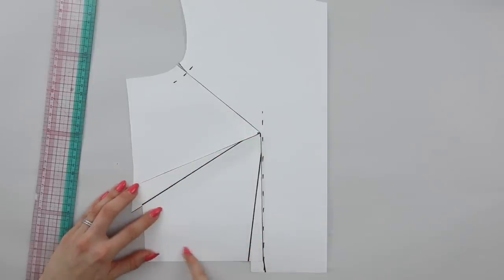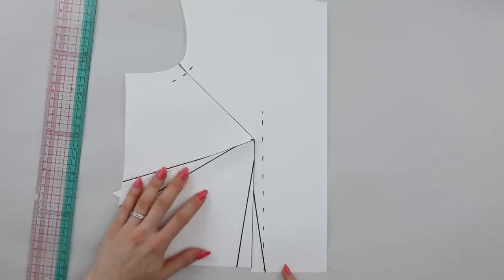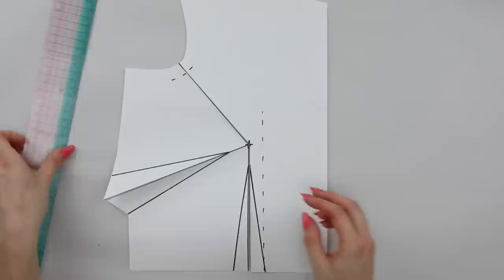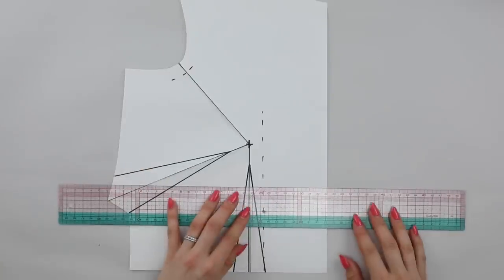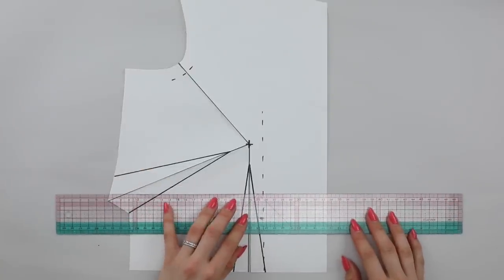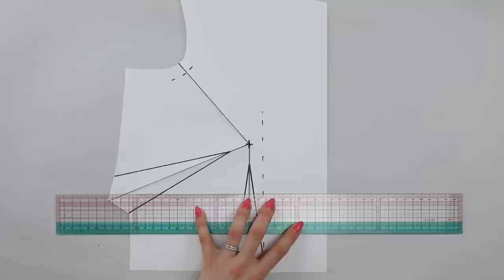Now by doing this, the side piece is now shorter than the center front piece, so we're also going to need to draw another line at a right angle to the center front and it can really be anywhere along this front edge.